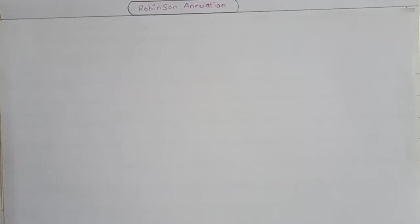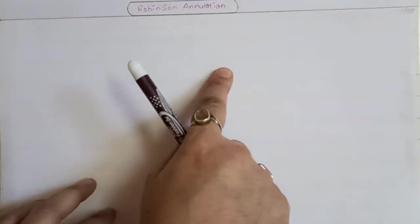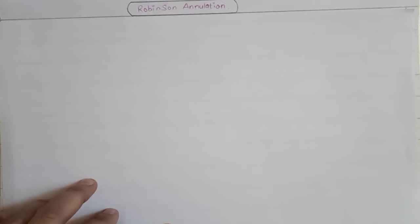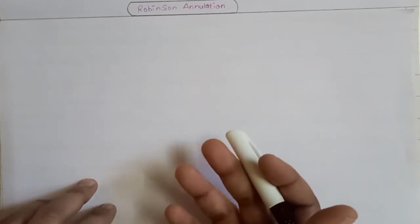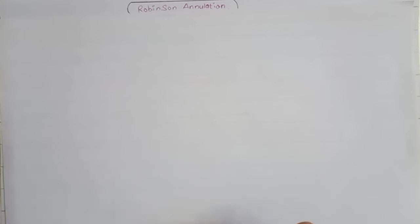Welcome to Pulse Excel. Today in this session we are going to discuss the Robinson annulation chemical reaction. This reaction is basically one kind of cascade reaction, also known as a tandem reaction. A tandem reaction means that when you combine two chemical reactions, you get the final product.